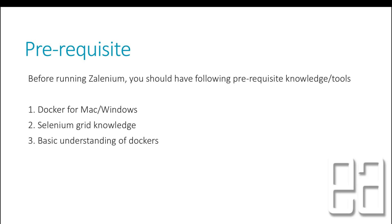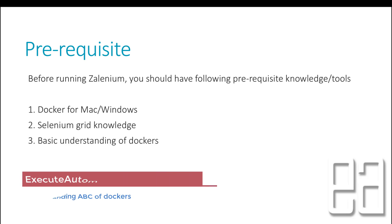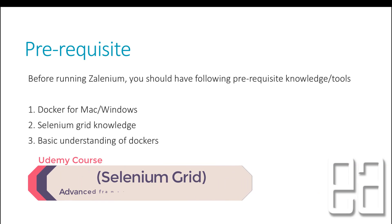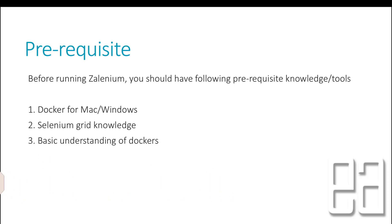Before proceeding, there are some prerequisite knowledge and toolings you need. First, you need to have Docker for Mac or Windows. If you haven't used Docker before, the executeautomation channel already has a series on understanding Docker for Windows. You also need a good understanding of Selenium Grid, which is discussed in the executeautomation YouTube channel and Udemy courses. Additionally, you need a basic understanding of Docker concepts like images, containers, and related theory.